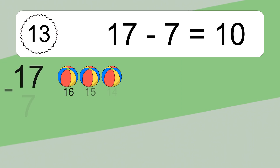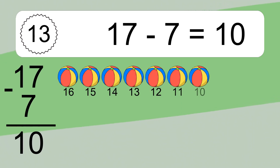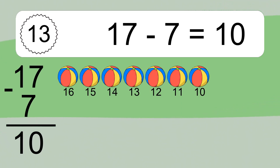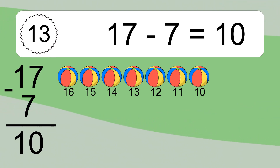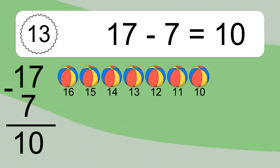17 minus 7 equals what? 17 minus 7 equals 10. Let's count it: 16, 15, 14, 13, 12, 11, 10.